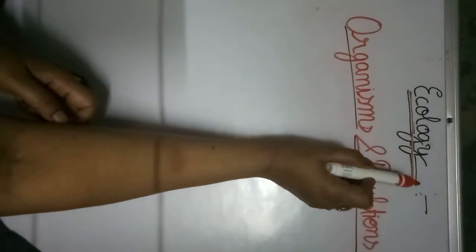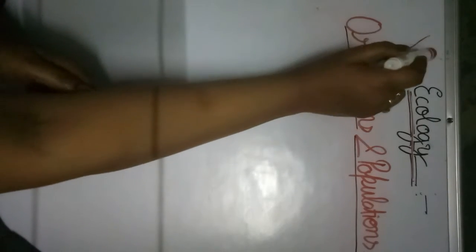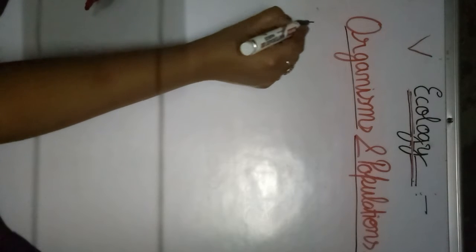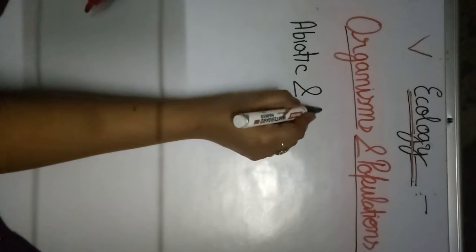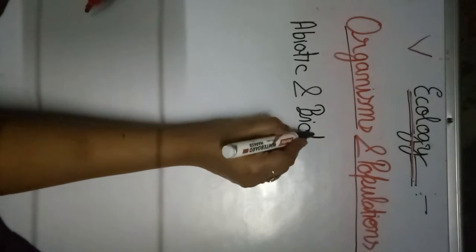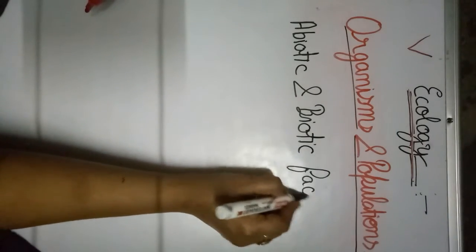Hello students, today we are going to start our fifth unit of Plus Two Biology, that is Ecology. Ecology is the fifth unit of biology. In this unit we are going to study about the interaction between the abiotic and biotic factors — how they both interact with each other and how they affect each other.